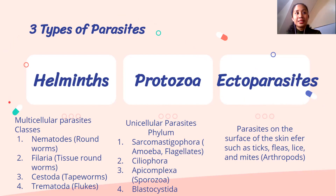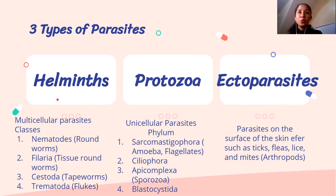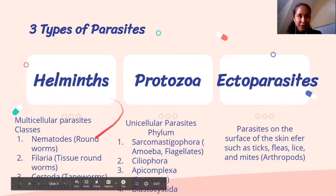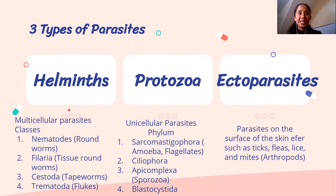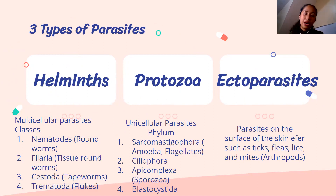Helminths are multicellular parasites — they have two or more cells. Usually helminths are bigger; they can be worms. You can see them macroscopically sometimes, with the naked eye. For example, Ascaris — they look like pasta.